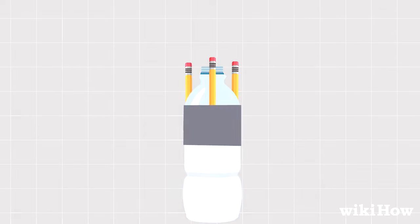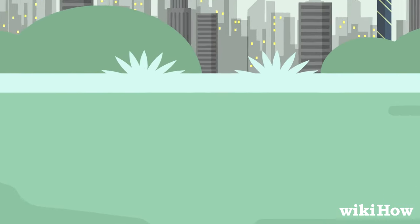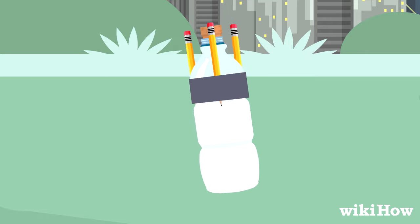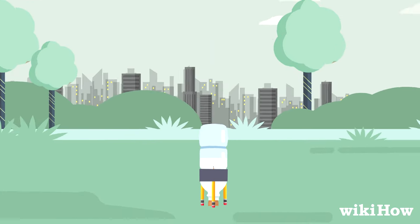Take your rocket outside to a wide open area. Drop the pack of baking soda into the bottle and quickly close the bottle with the cork. Shake the rocket and stand it up on the ground and stand back.